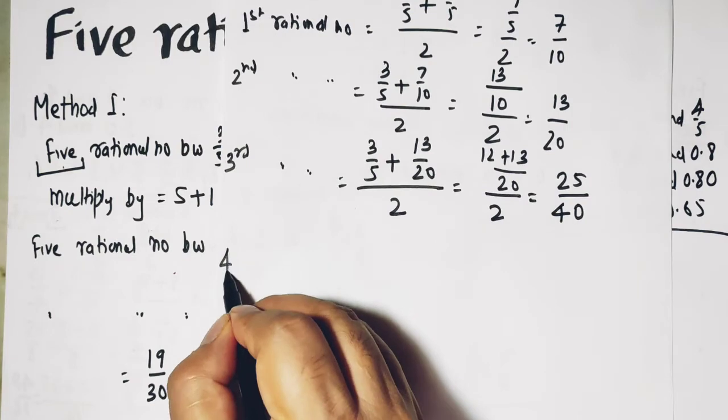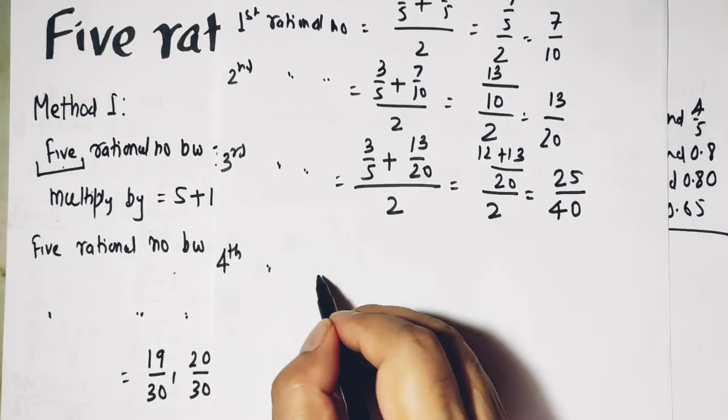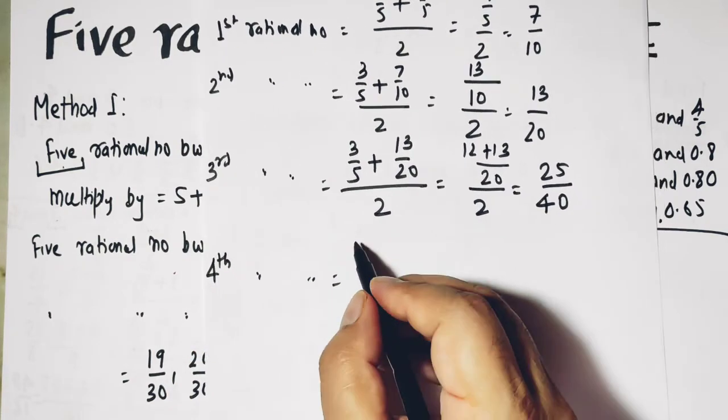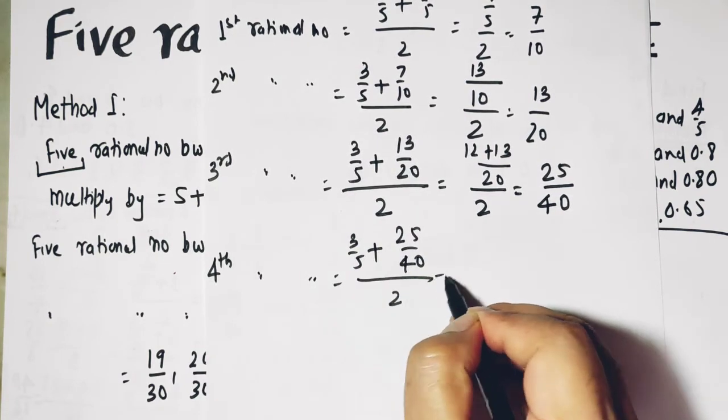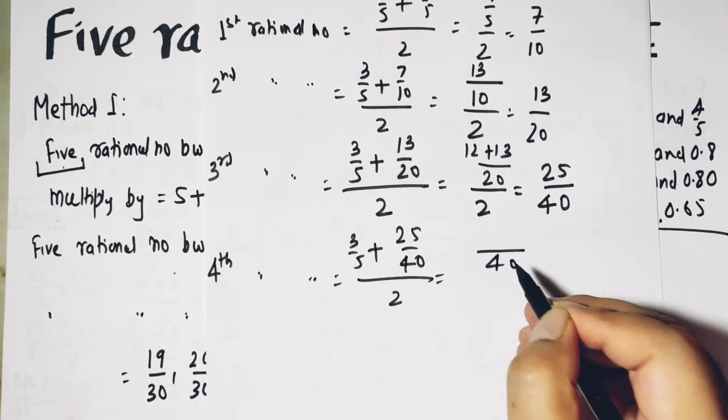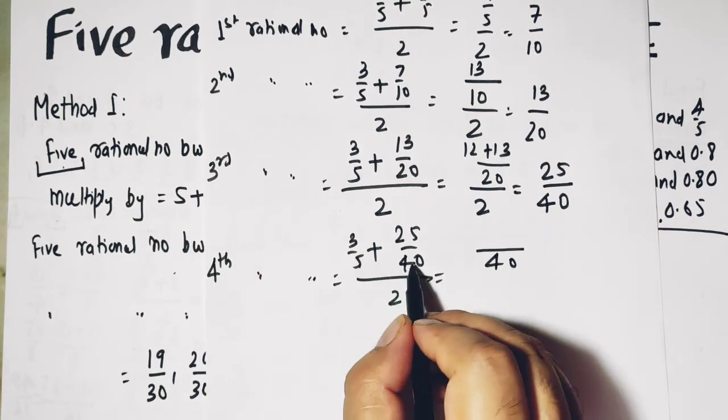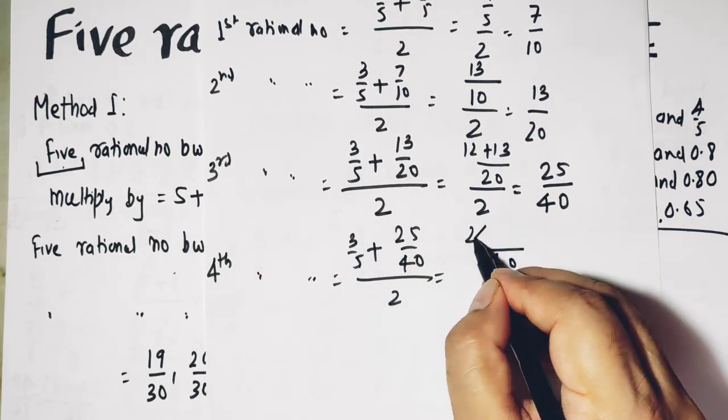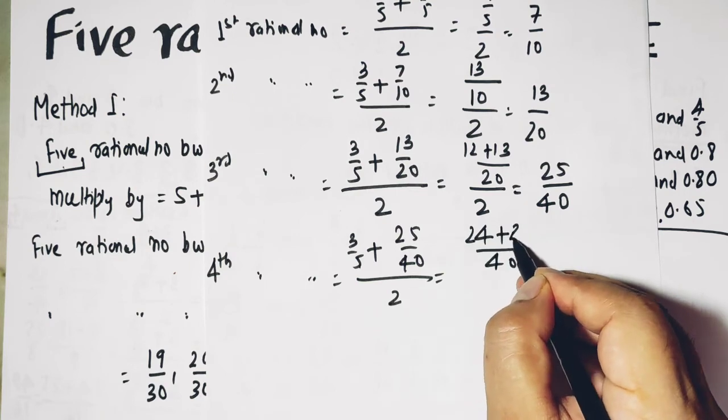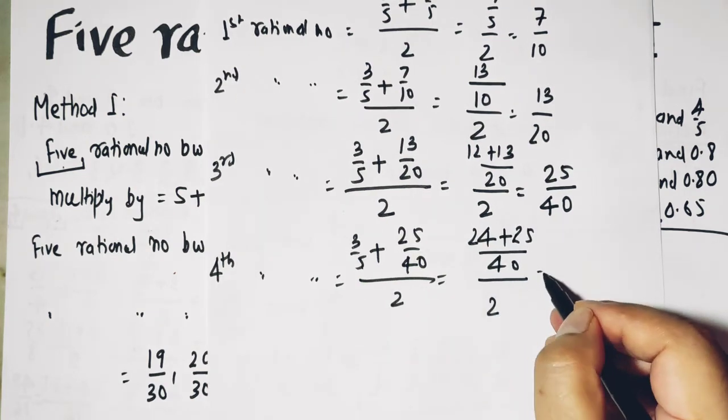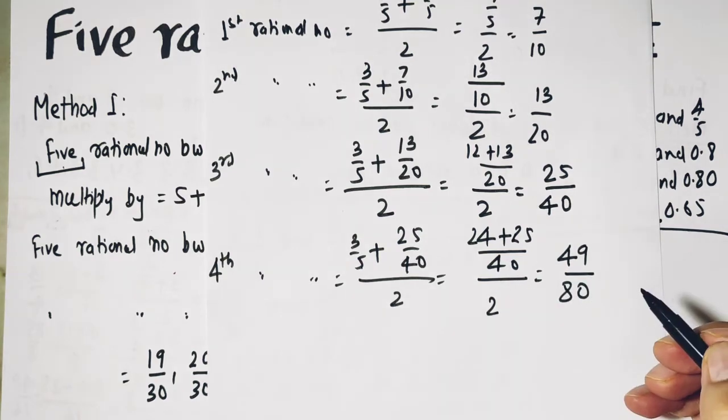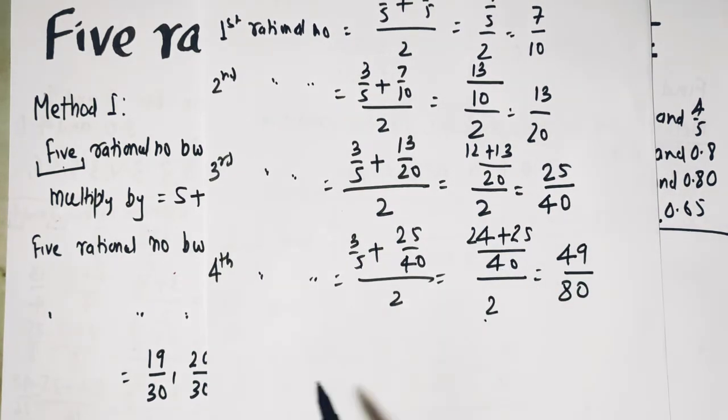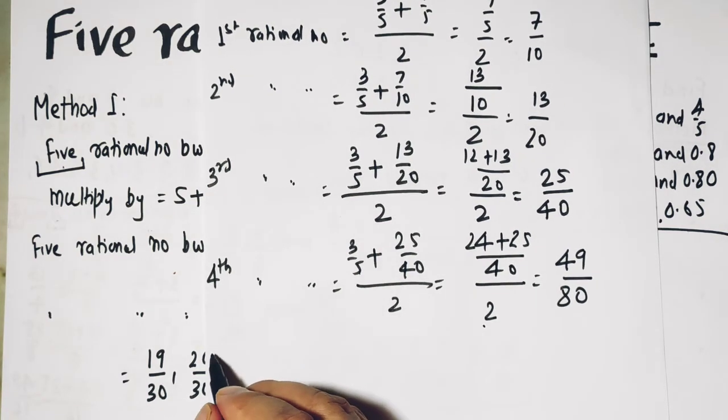Now we have to find the fourth. It will be again take this, 3 upon 5 and 25 upon 40 divided by 2. Take LCM as 40. 8 times 3 is 24 plus 25 upon 2, and it is 49 upon 80. This goes down here and becomes 80.